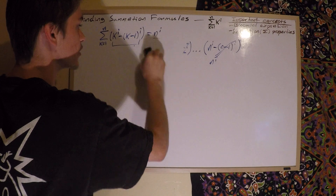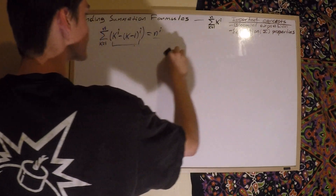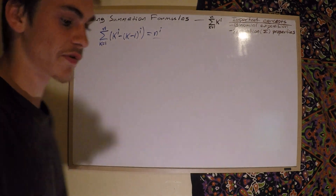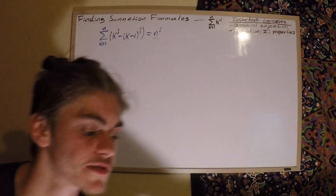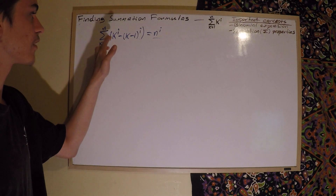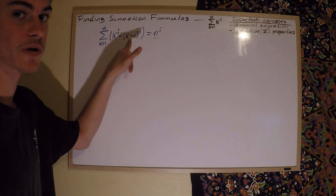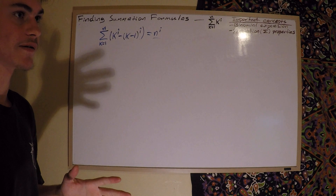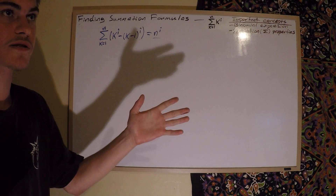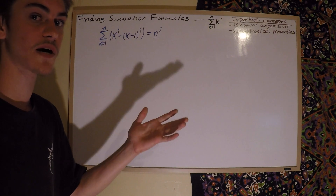This is actually going to be relevant for the binomial expansion, because it's going to let you get rid of the highest power of k in the expansion of k minus 1. You're using the law that two equivalent expressions are also going to have an equivalent sum.